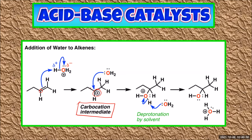But now the oxygen has a positive charge. So when a water molecule in the solvent comes along, it can bond to one of the hydrogens. This reforms the hydronium ion, which is the acid catalyst. The catalyst has been regenerated at the end of the reaction and products have been formed.